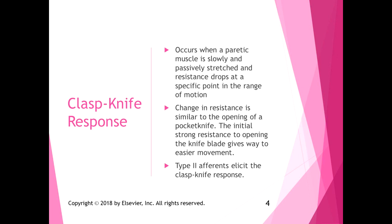Type 2 afferents — the Golgi tendon organ afferents — elicit the clasp knife response. You try to slowly stretch the muscle and it gives you resistance, resistance, resistance, and then at a specific point in the range of motion the resistance drops and you can move it easily. That's the clasp knife response.